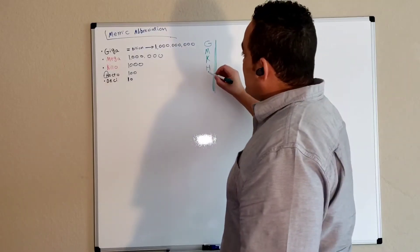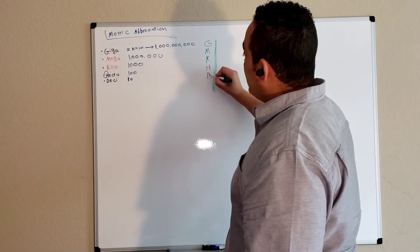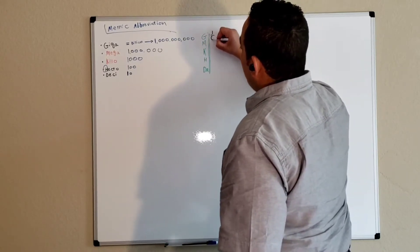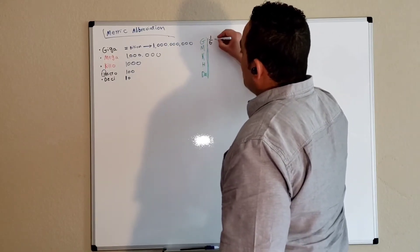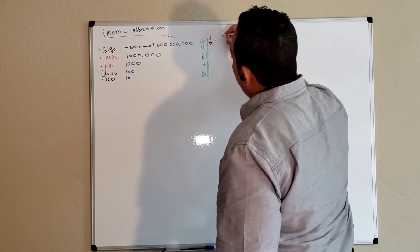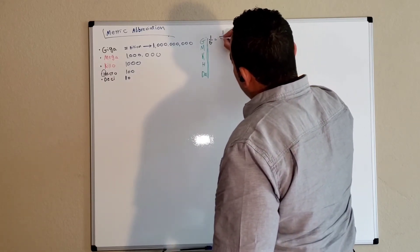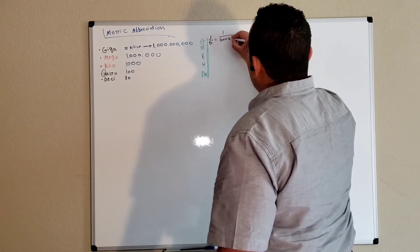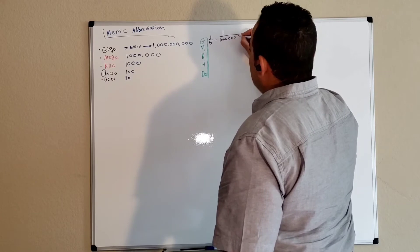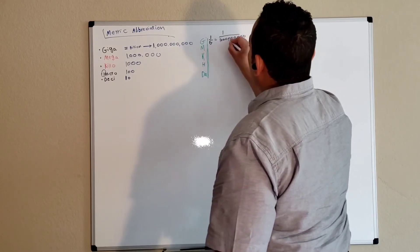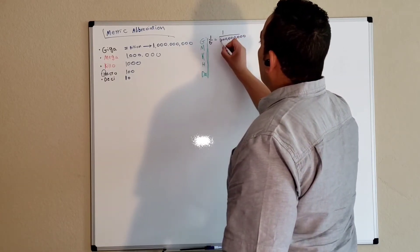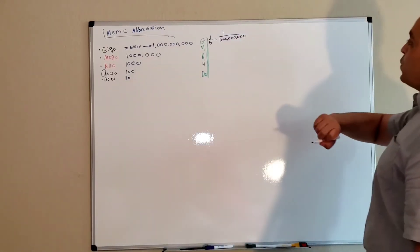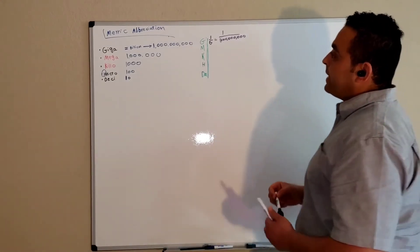Now for the inverse prefixes. One over giga equals one over a billion — billion has nine zeros. This abbreviation is called nano.